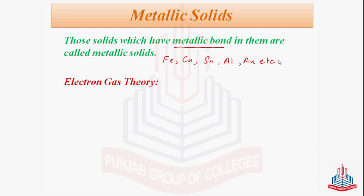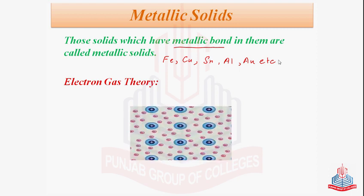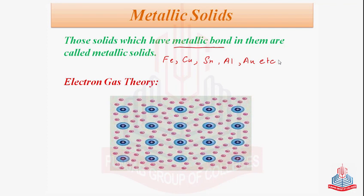According to this theory, each atom in a metal crystal loses its valence electron. When the valence electrons are free, they create a pool — just like this. These valence electrons are present in the interstitial spaces, and they are believed to be held together by the electron pool or electron gas created.